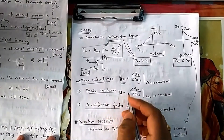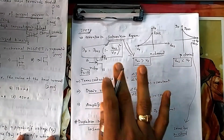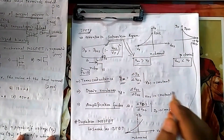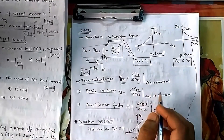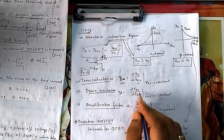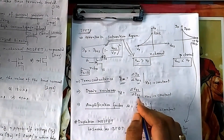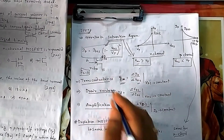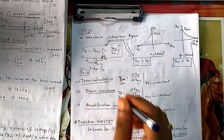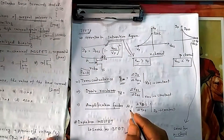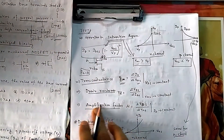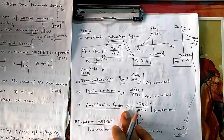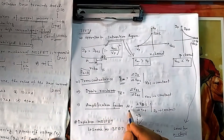In small-signal analysis, drain resistance comes in parallel. You can remember it as V_DS divided by I_DS — that is your drain contact resistance. The amplification factor mu tells you how much V_GS input corresponds to how much V_DS output voltage.